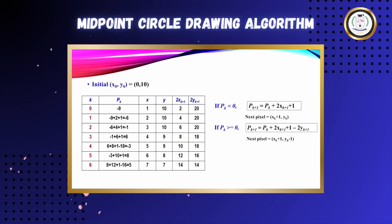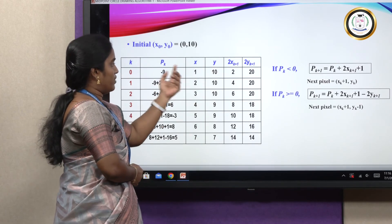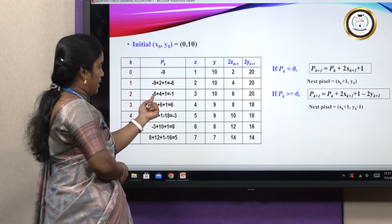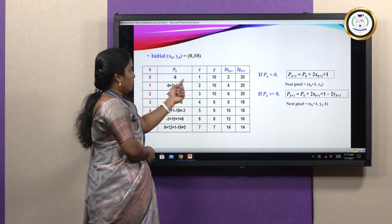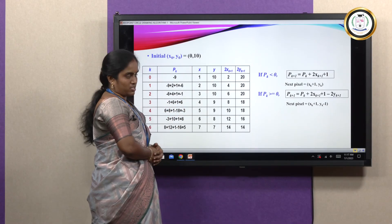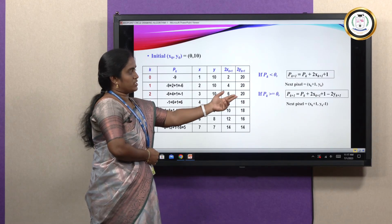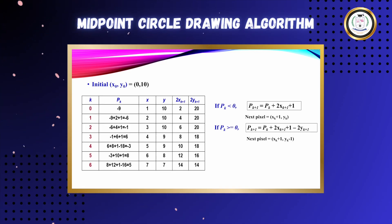Since pk+1 = −6 < 0, x increments and y remains constant, giving pixel (2, 10). Substituting again gives pk+1 = −1, still negative, so x increments to 3, y stays at 10, giving (3, 10). The next pk+1 = 6, which is greater than 0, so we use the second case: x increments to 4 and y decrements from 10 to 9, giving pixel (4, 9).